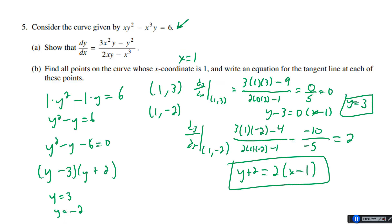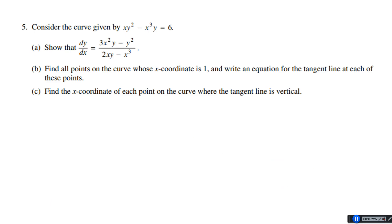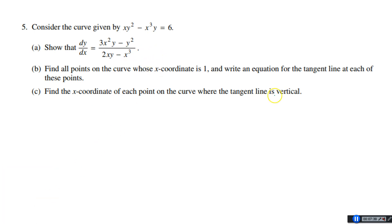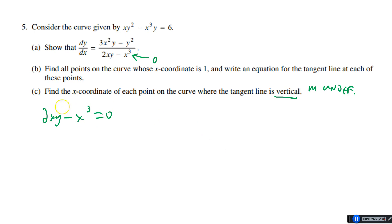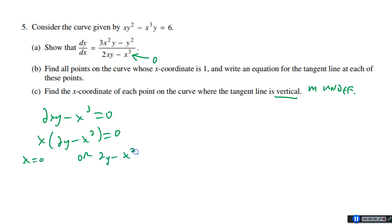Now part 3: find the x-coordinate of each point on the curve where the tangent line is vertical. A vertical tangent means the slope is undefined, which means dy/dx is undefined — that happens when the denominator is 0. So 2xy − x³ = 0. Factoring out x: x(2y − x²) = 0. So either x = 0 or 2y − x² = 0.